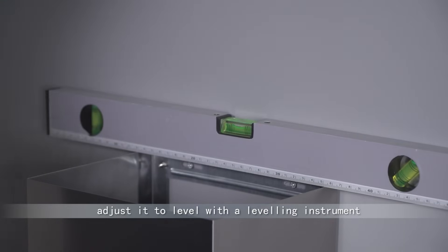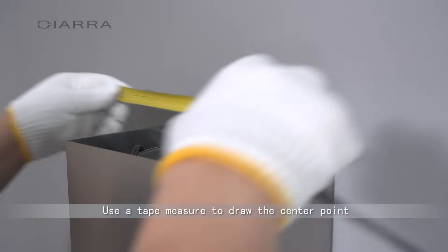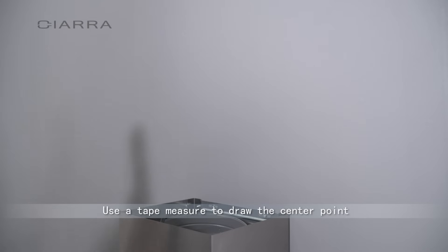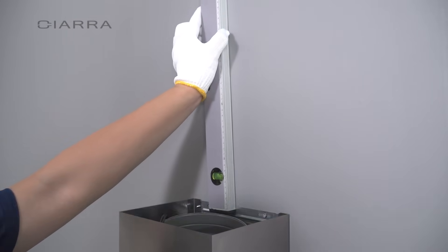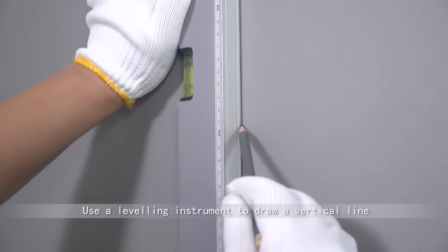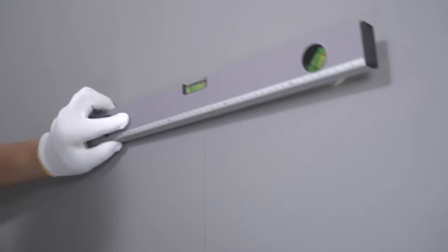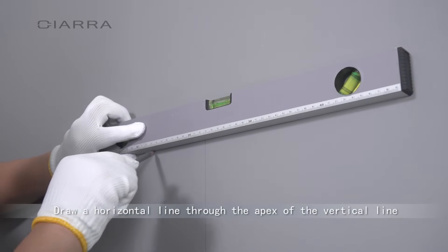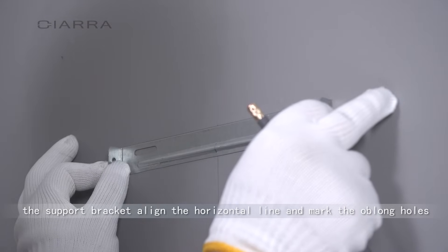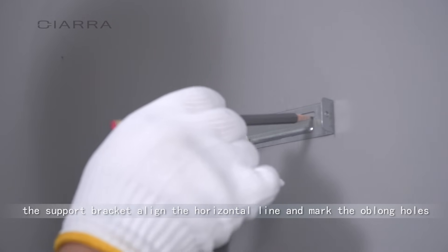Adjust it to level with a leveling instrument. Use a tape measure to draw the center point on the top of the lower chimney. Use a leveling instrument to draw a vertical line along the center point. Draw a horizontal line through the apex of the vertical line. The support bracket aligns with the horizontal line and mark the oblong holes.